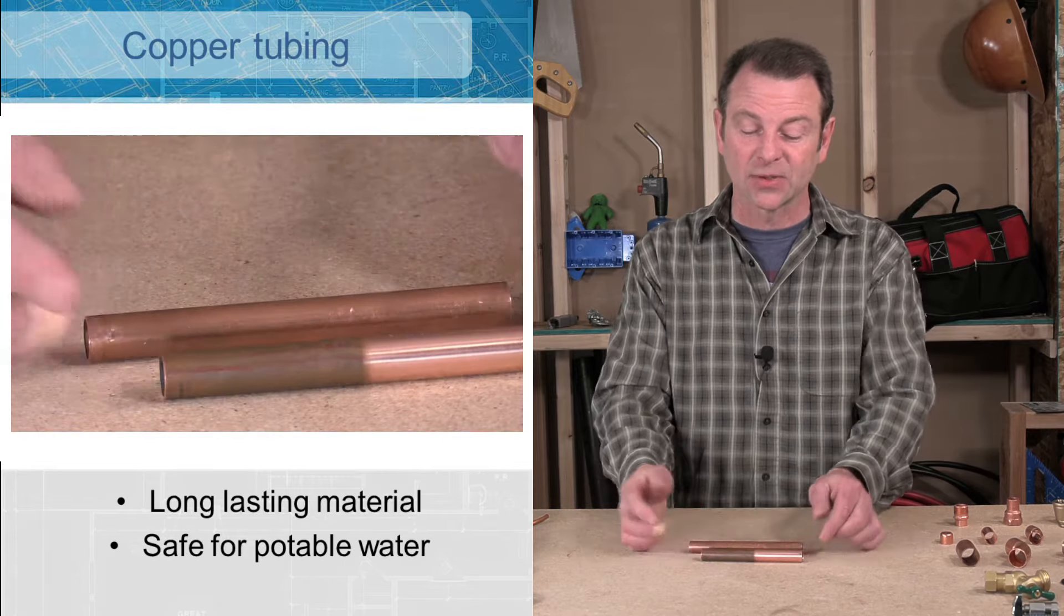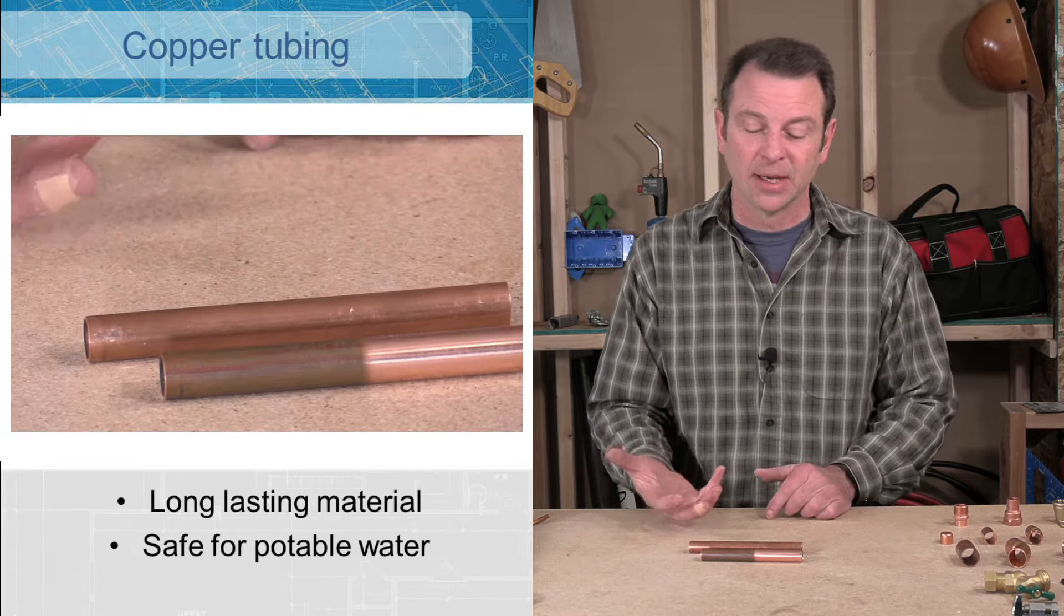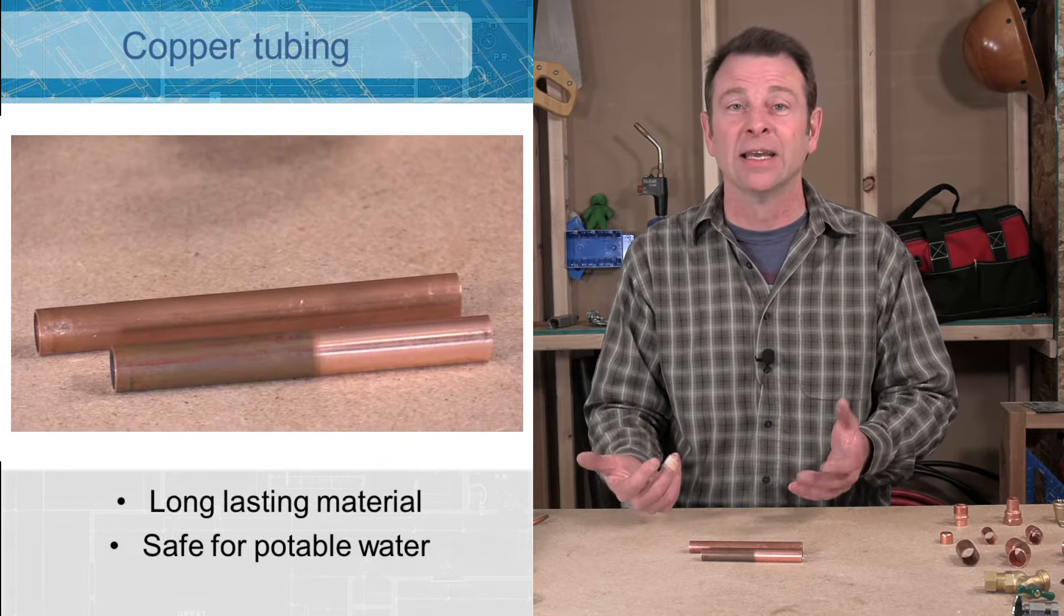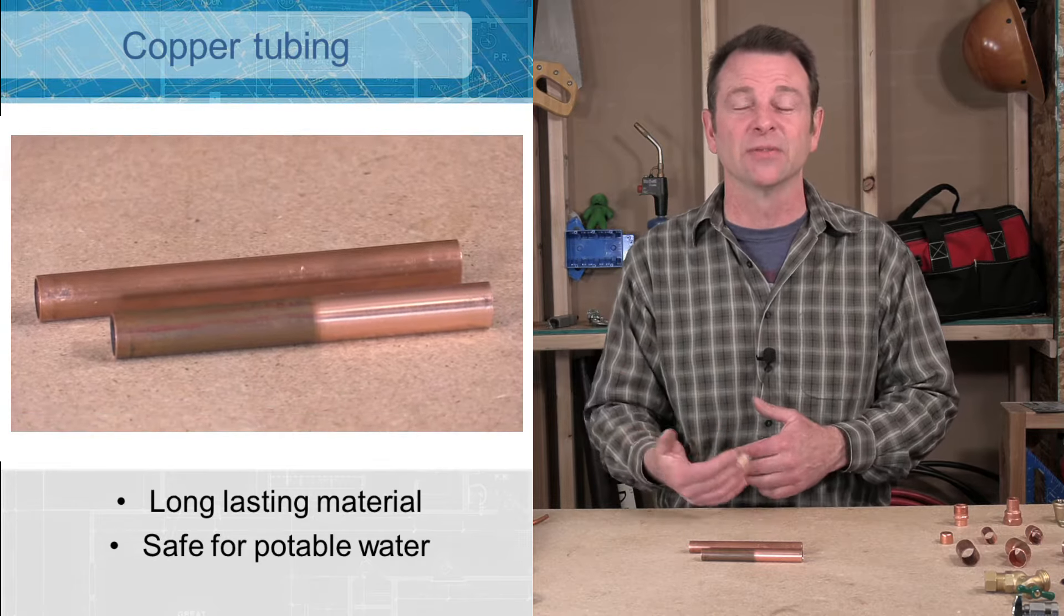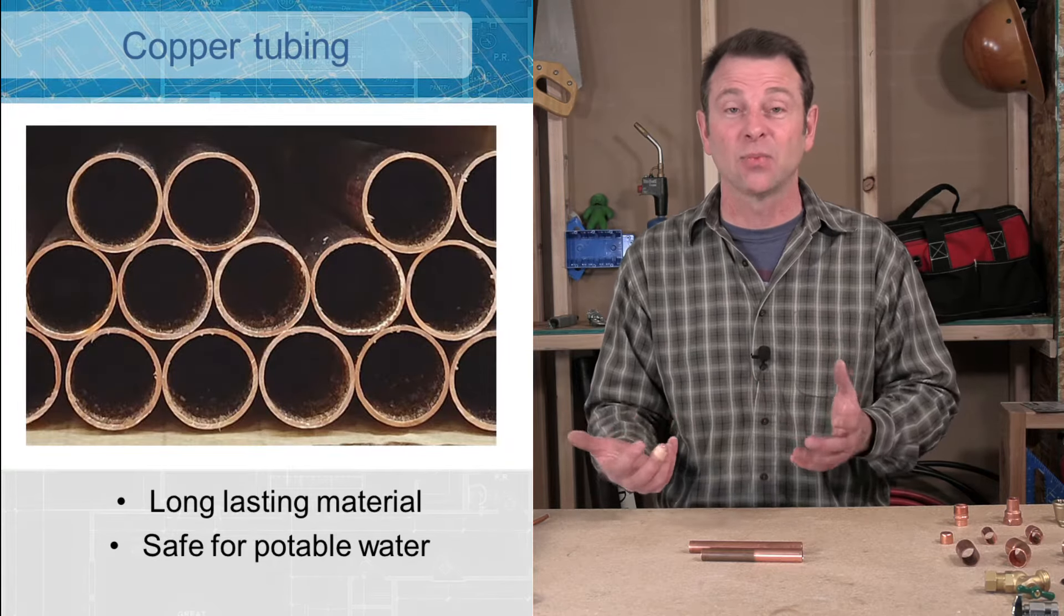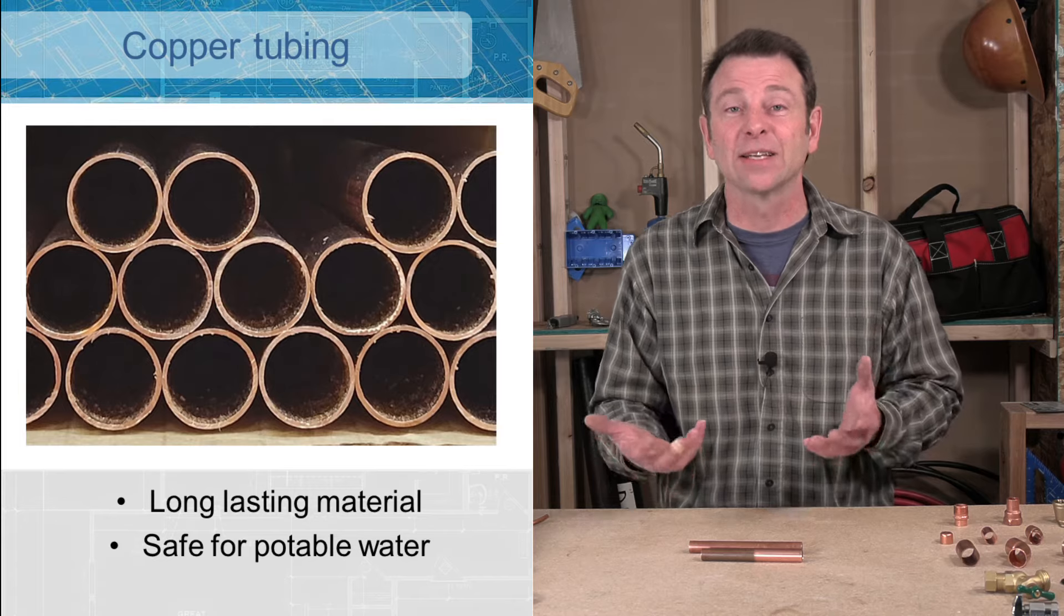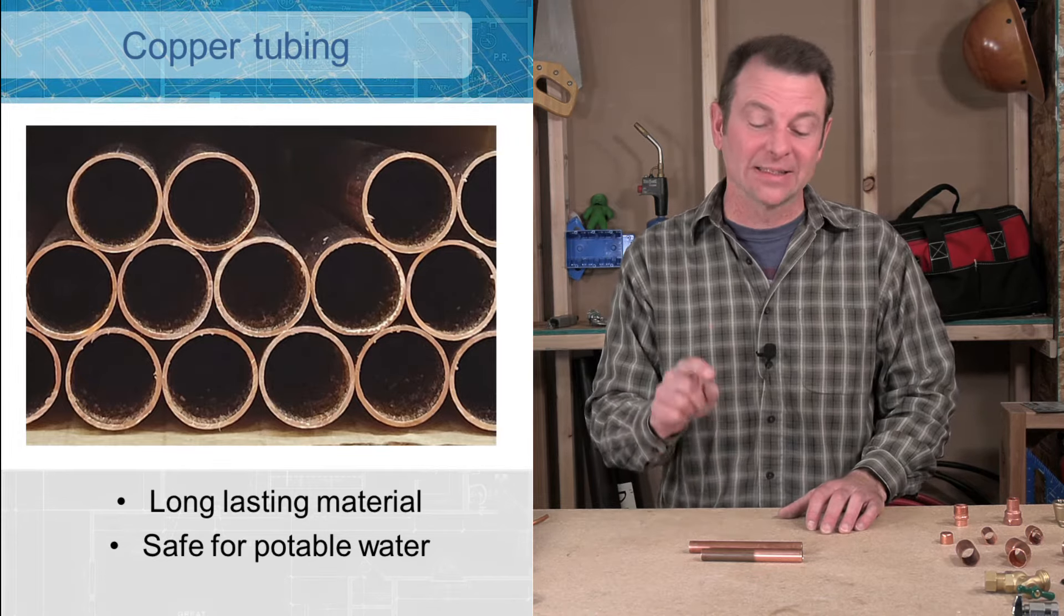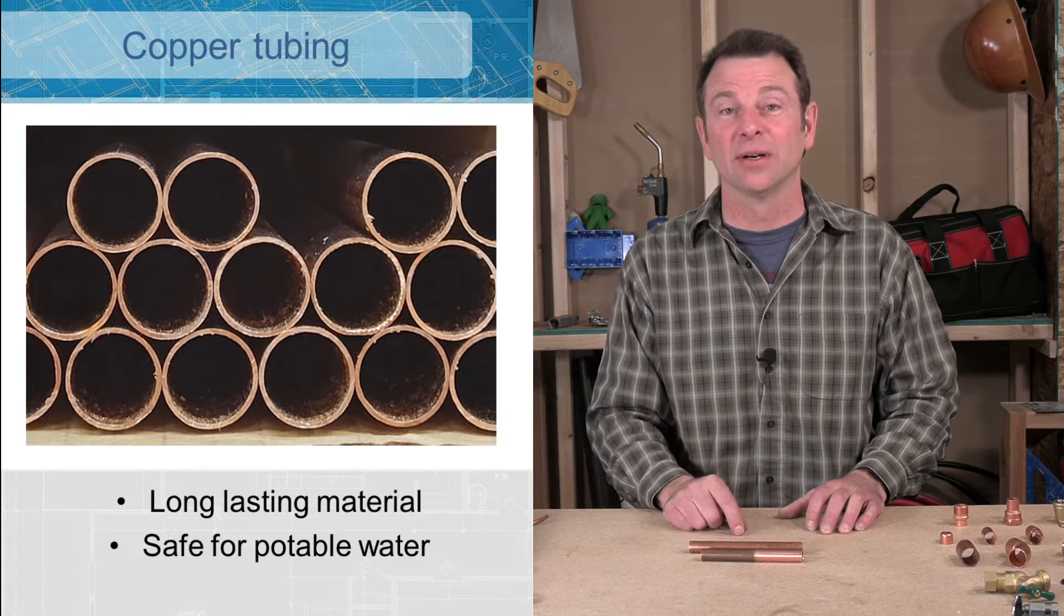Some people think that copper has sort of a rust color to it, but copper doesn't rust. This is sort of a patina that it takes on. Copper is not very corrosive. It takes a long time for copper to corrode. So that's one reason why it's a great plumbing material. The other reason to use copper on your plumbing is that it's safe for our drinking water.